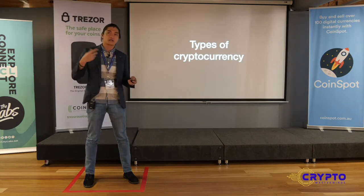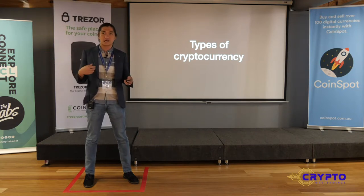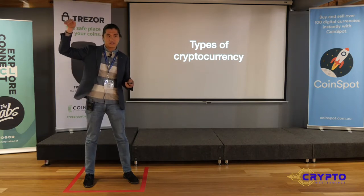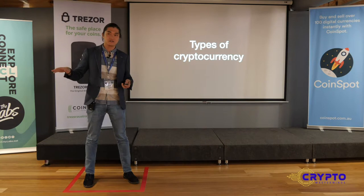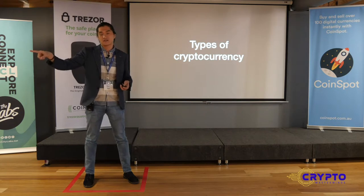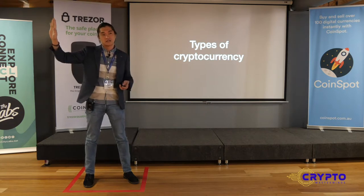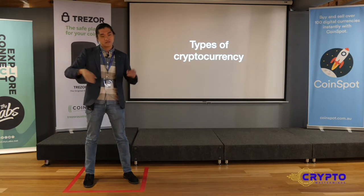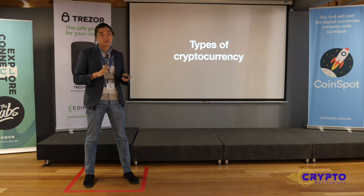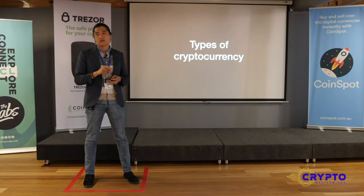If tomorrow I look at a coin and say it's useless and dump everything, that creates sell pressure. Someone else may at the same time look at the same coin and say it's cheaper than when they intended to buy it, so they buy in — that creates buy pressure. That supply and demand is what keeps the price moving up and down, and it will never really find a stable point without any form of intervention.